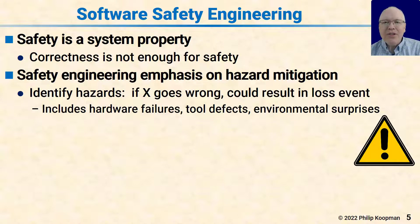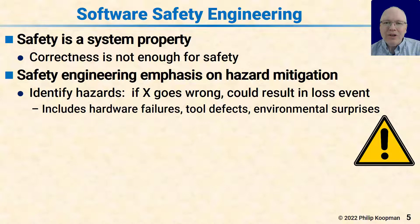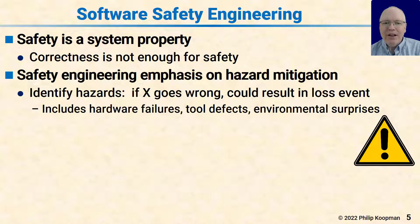If something goes wrong, that could result in a loss event, and we need to understand how that could happen and what the loss event is. Those things that can go wrong include hardware failures, tool defects, and environmental surprises. These are systems operating in the real world, so assumptions that you will never have a computational defect due to a radiation-induced upset — that's not the real world. Those things happen, especially if you're deploying at large scale where lives are on the line.